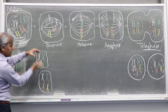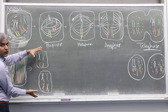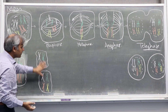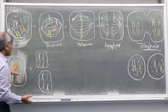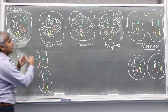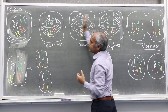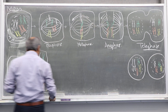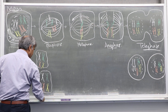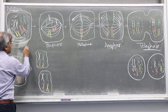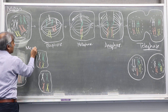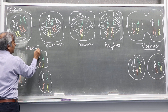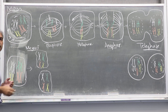After completion of meiosis I, you have two cells with half the number of chromosomes, because the homologs moved to opposite poles. This was the result of meiosis I, which is also called reductional division.